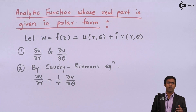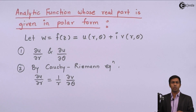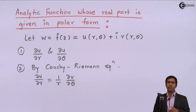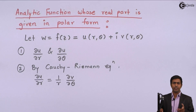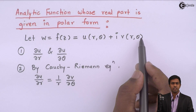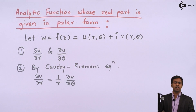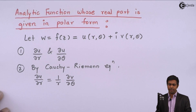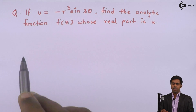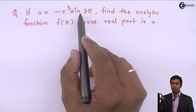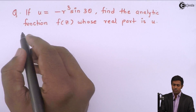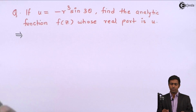Then by the method of variable separation and integrating both sides, we get the value of V. Once we have V, we put V and U into F(z) = U + iV to get the analytic function. To understand this concept, we take a numerical example where U is given as minus R³ sin(3θ) and we have to find the analytic function whose real part is U.